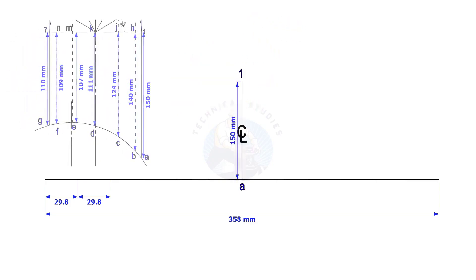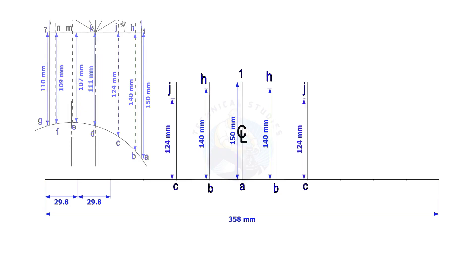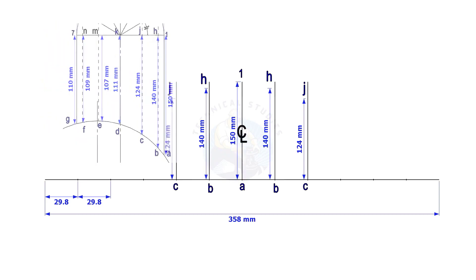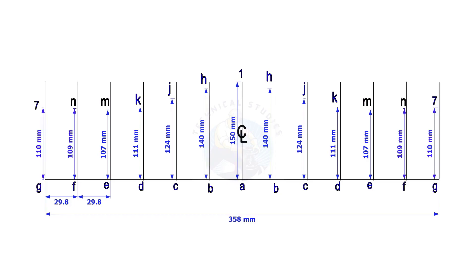Mark the dimension EA1 on the center of the line. Mark BH on both sides of the center line. Complete marking CJ etc. on both sides, as shown. Draw a curved line connecting these marks.